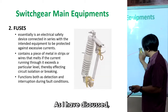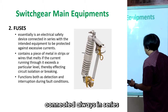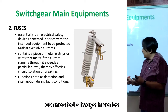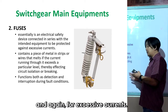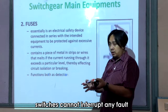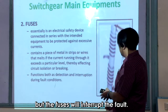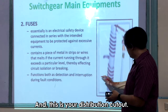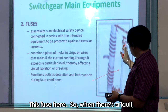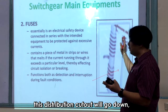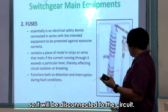A fuse can be a distribution cutout. Essentially, it is an electrical device connected in series to protect the equipment from excessive currents. As discussed, switches cannot interrupt any fault, but fuses will interrupt the fault. This is your distribution cutout — when there is a fault, this cutout will drop down and disconnect from the circuit.